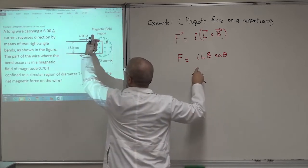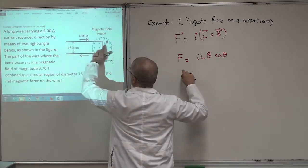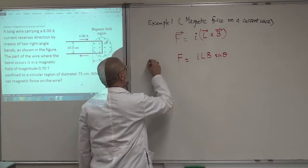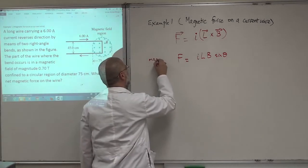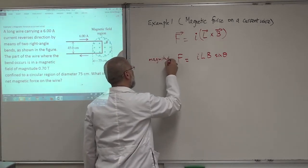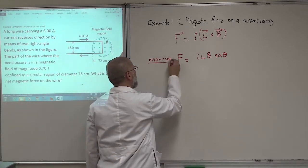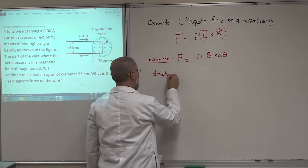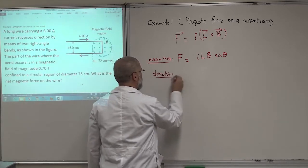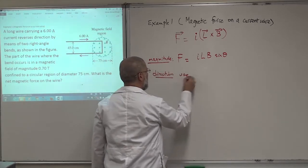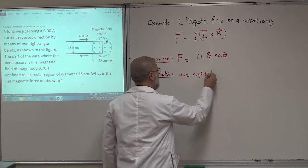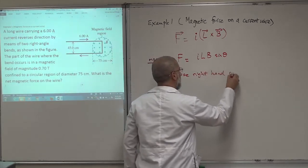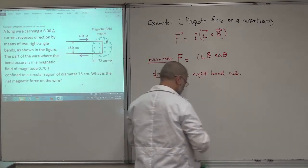This is I, and B is out of the page. For the direction of the force, you have to use the right-hand rule to get the right direction.